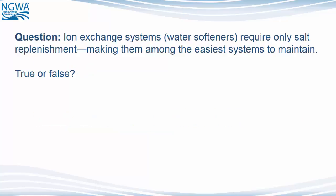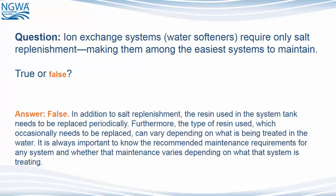Question: Ion exchange systems or water softeners require only salt replenishment, making them among the easiest systems to maintain. True or false? The answer is false. While these systems are easy to maintain, in addition to salt replenishment, the resin used in the system tank needs to be replaced periodically. Furthermore, the type of resin used can vary depending on what is being treated in the water. It is always important to know the recommended maintenance requirements for any system and whether that maintenance varies depending on what the system is treating.